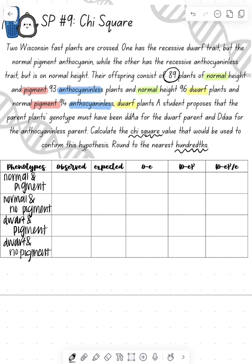Then we look above and see how many of them are normal pigment. Well, that's 89. Normal with no pigment is 93. Dwarf pigmented is 96. And then dwarf with no pigment is 94.